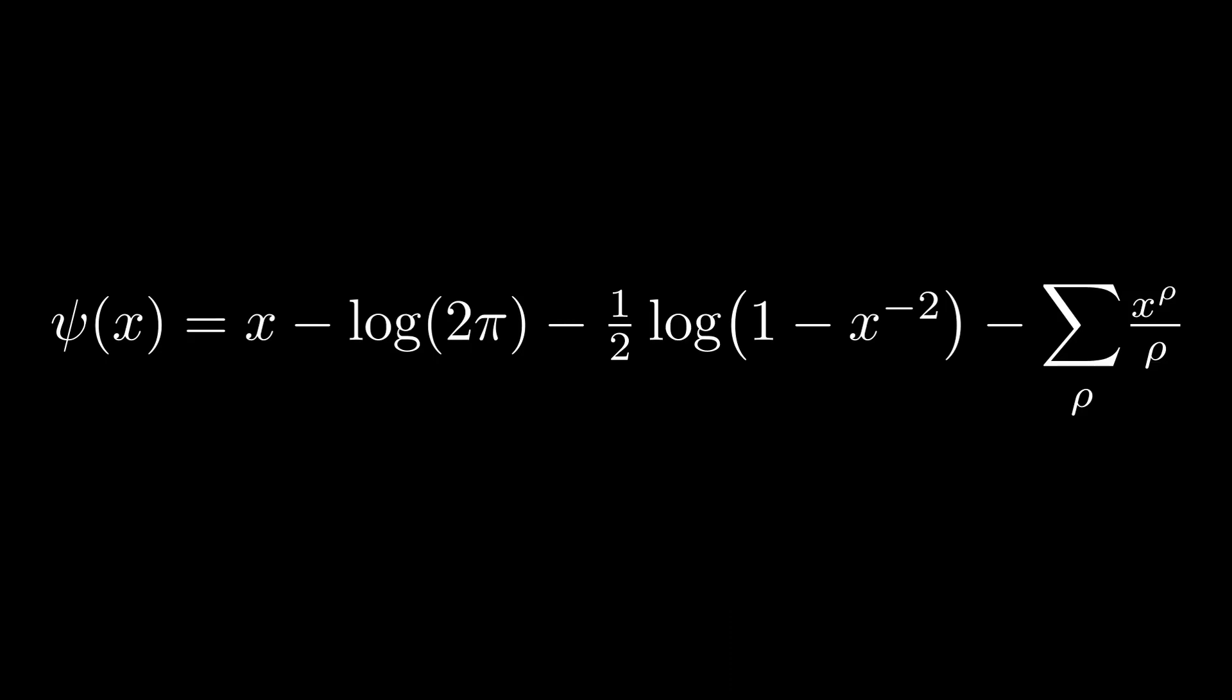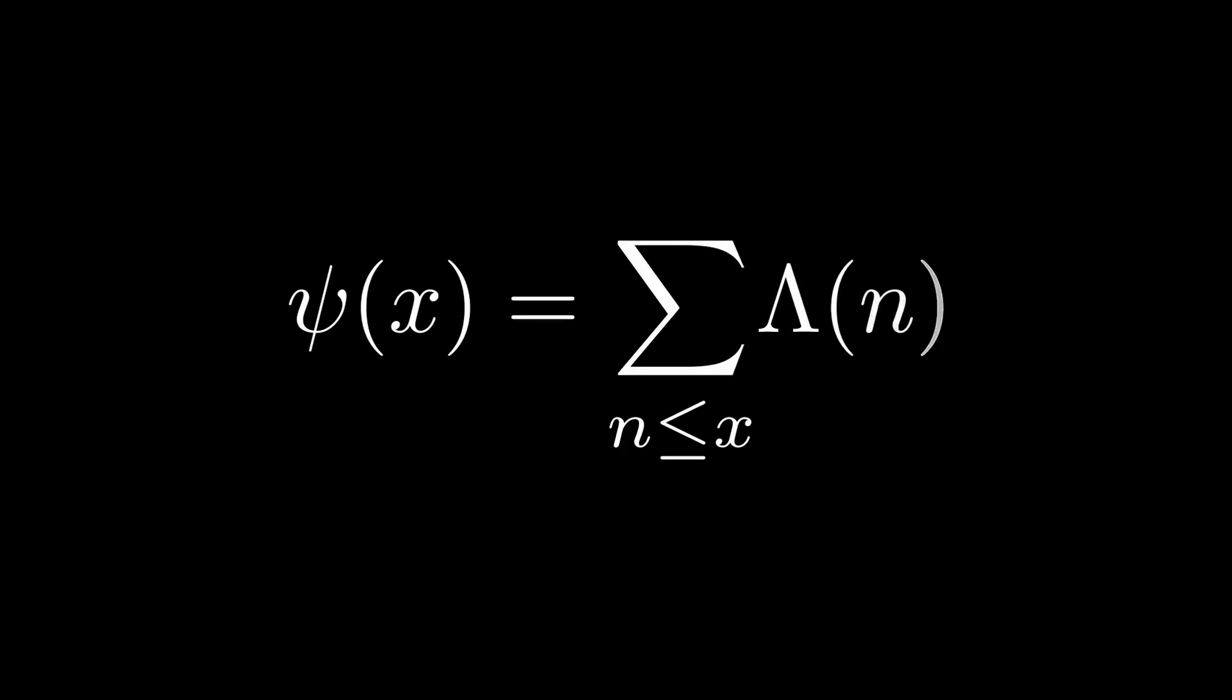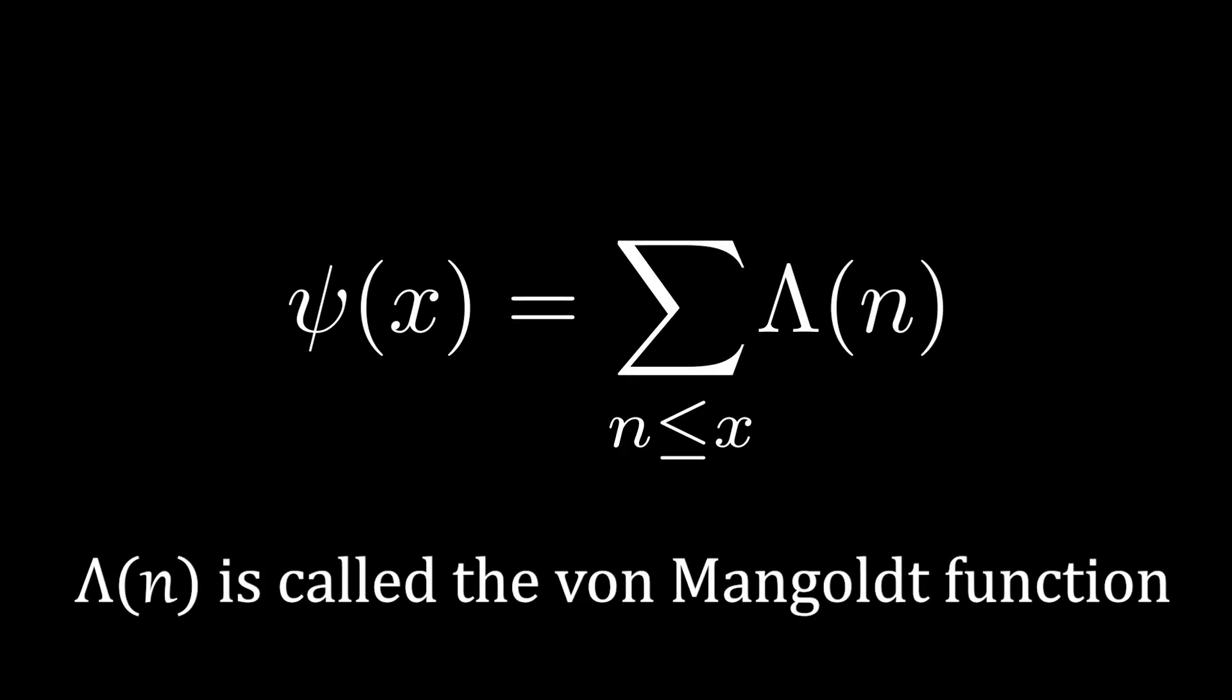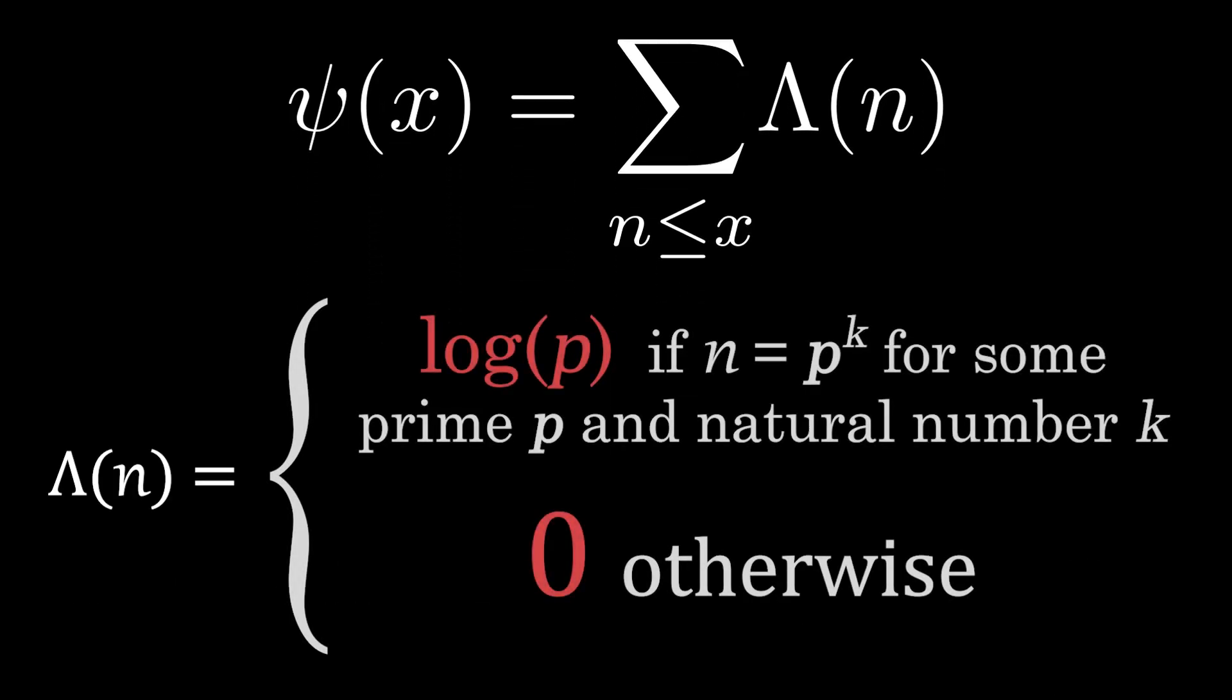ψ of x is very similar to J of x, but instead of counting primes and prime powers, ψ of x increases by a value of log p at any number of the form p to the k, where p is a prime number and k is a natural number.